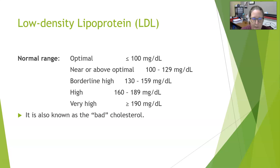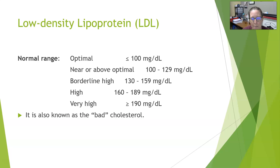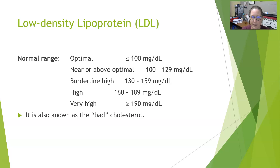Low-density lipoprotein, or LDL: optimal is less than 100 milligrams per deciliter. Near or above optimal is 100 to 129 milligrams per deciliter. Borderline high is 130 to 159, high is 160 to 189, and very high is above 190 milligrams per deciliter. LDL is known as the bad cholesterol — it is the lipoprotein that carries cholesterol from the liver to the cells of the body. HDL, by contrast, takes cholesterol from the cells back to the liver for disposal.